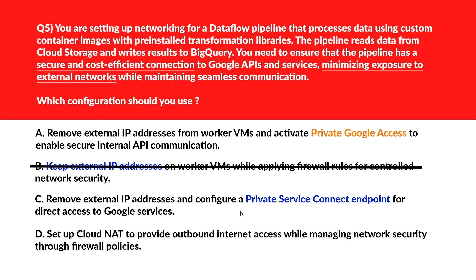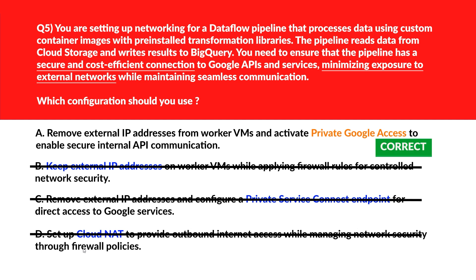Option C says configure a Private Service Connect endpoint. Private Service Connect is useful for accessing Google-managed services but is unnecessary for direct API calls — we'll eliminate it. Option D says set up Cloud NAT to provide outbound internet access while managing network security through firewall policies. Cloud NAT provides outbound connectivity but doesn't eliminate the need for external IPs, which will increase cost. Option D is wrong. We'll lock option A as the right choice.